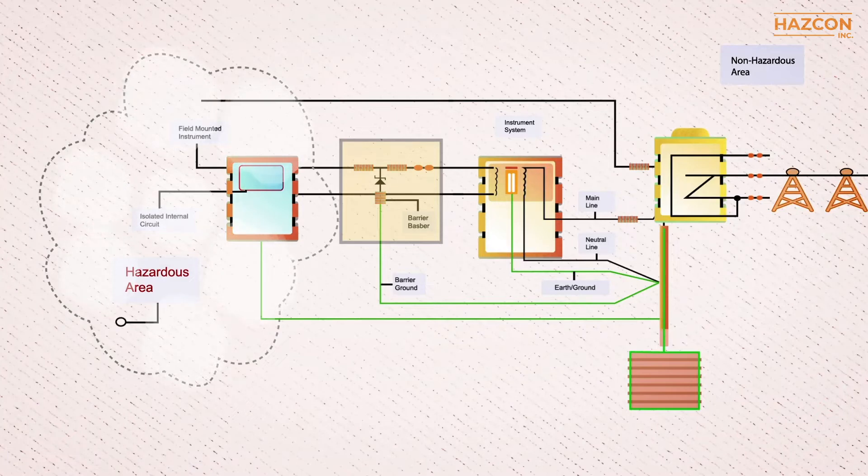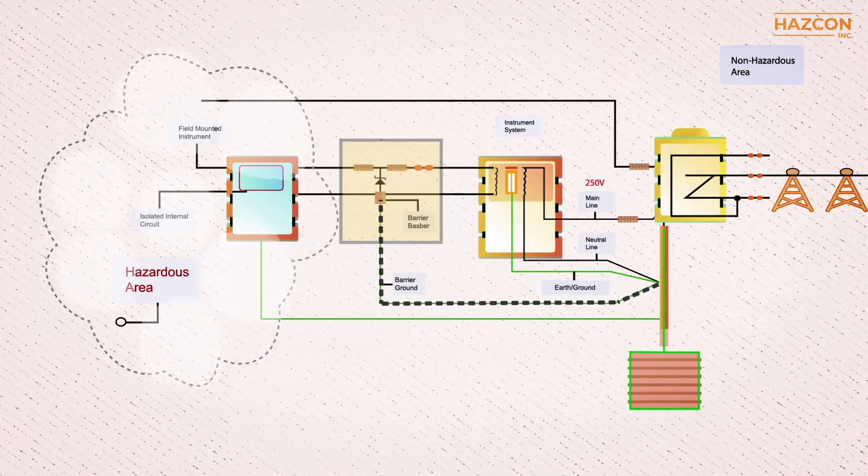They limit power to the field device in the hazardous area and must be grounded properly in order to direct the fault current to the main referenced grounding point, thus limiting the voltage and current output of the field device to safe levels for the given environment.